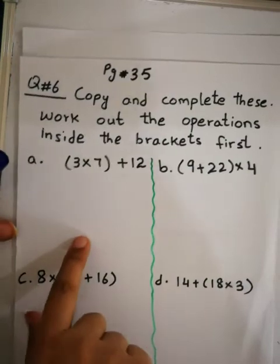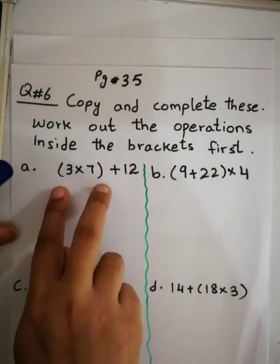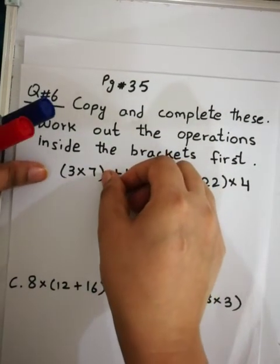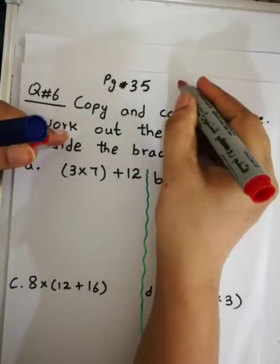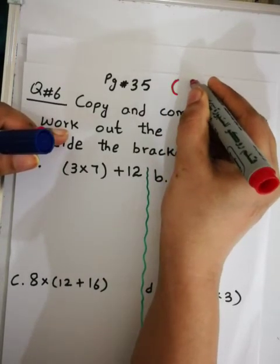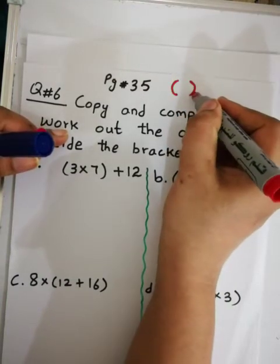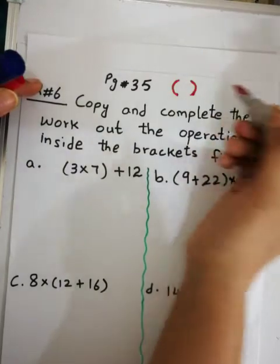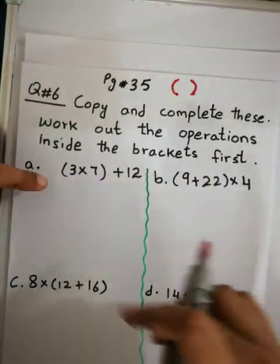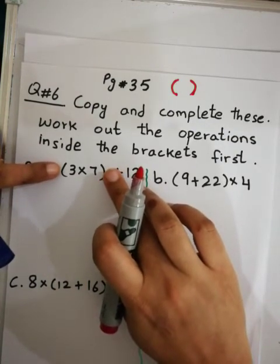Let's start with part a: (3×7)+12. The numbers 3×7 are written inside the bracket. This is called a round bracket — it has an opening half-circle and a closing half-circle. They are saying: work out the operation inside the brackets first. Whatever is in the bracket, that operation you have to solve first.